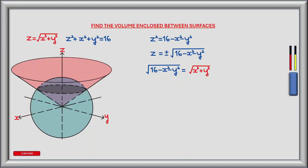We can now equate the square root of 16 minus x squared minus y squared to the square root of x squared plus y squared. Squaring both sides gives 16 minus x squared minus y squared equals x squared plus y squared. Rearranging, we get the equation of the intersecting region: x squared plus y squared equals 8, which is a circle with radius 2 multiplied by the square root of 2.